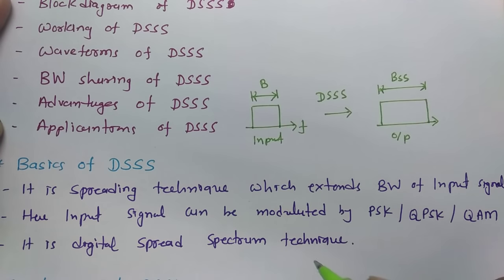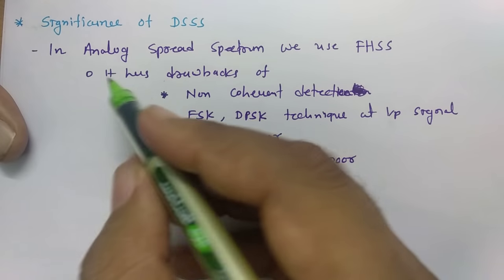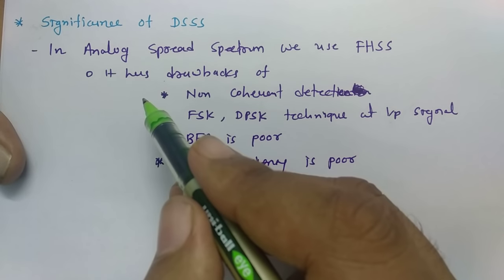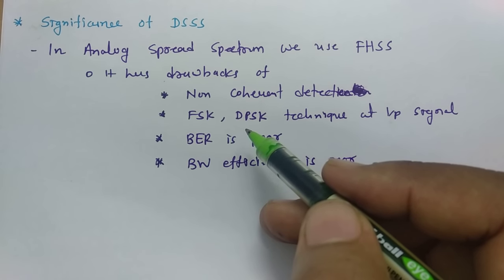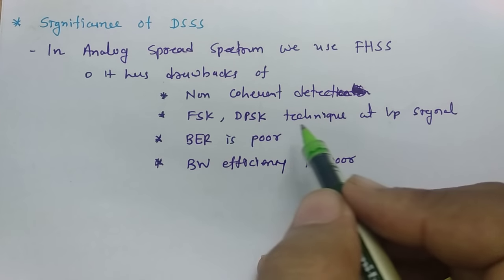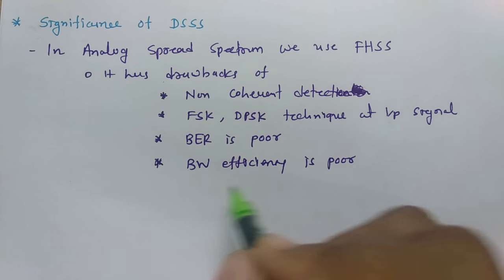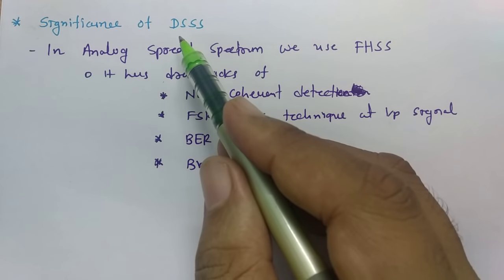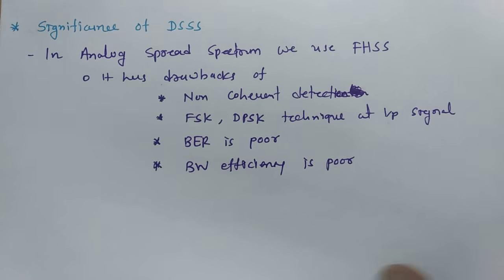Why do we go for DSSS — Direct Sequence Spread Spectrum? As seen in the previous session, analog spread spectrum using FHSS has drawbacks: non-coherent detection, which restricts input to only FSK or DPSK techniques. Because of that, the bit error rate is poor and bandwidth efficiency is poor. To improve bit error rate and bandwidth efficiency, we go for DSSS. To understand how DSSS operation is performed, let us look at a block diagram.